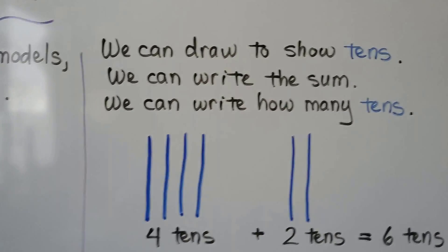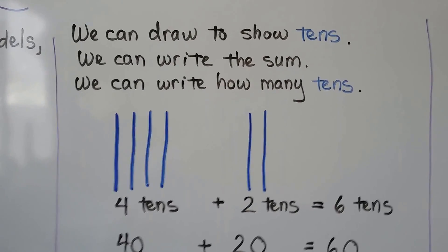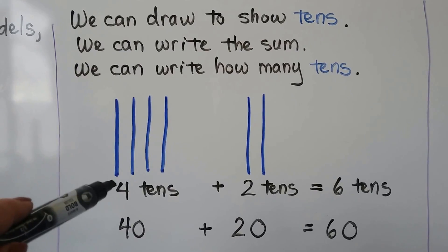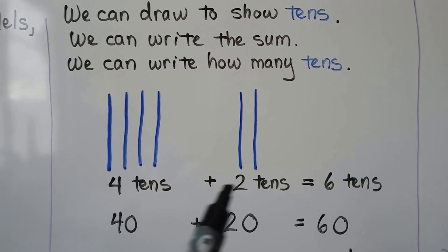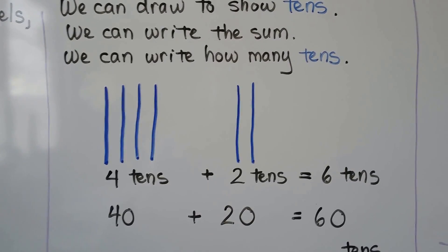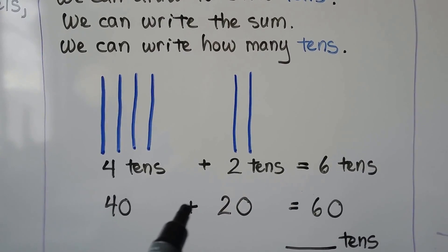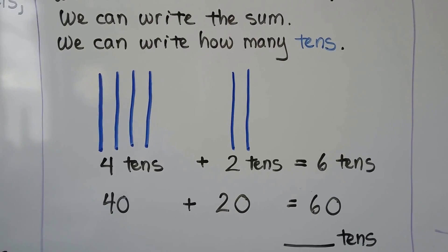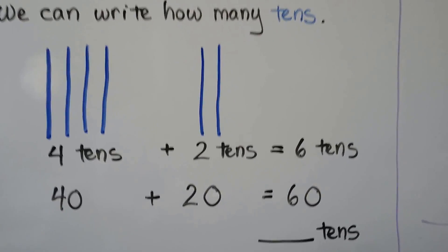We can draw to show tens. We can write the sum. We can write how many tens. We can say that each of these long lines is a ten. We have four tens plus two tens is equal to six tens. Forty plus twenty is equal to sixty. Sixty is six tens.